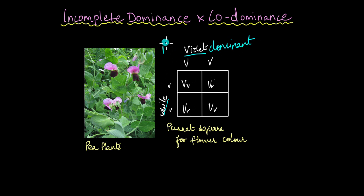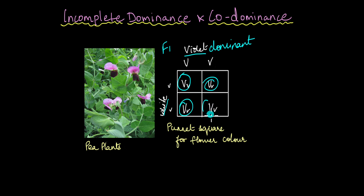He observed that in the F1 generation, the recessive white phenotype was not expressed at all. All the offspring were heterozygous but expressed the violet color, which led him to hypothesize that the violet color was dominant over the white color.